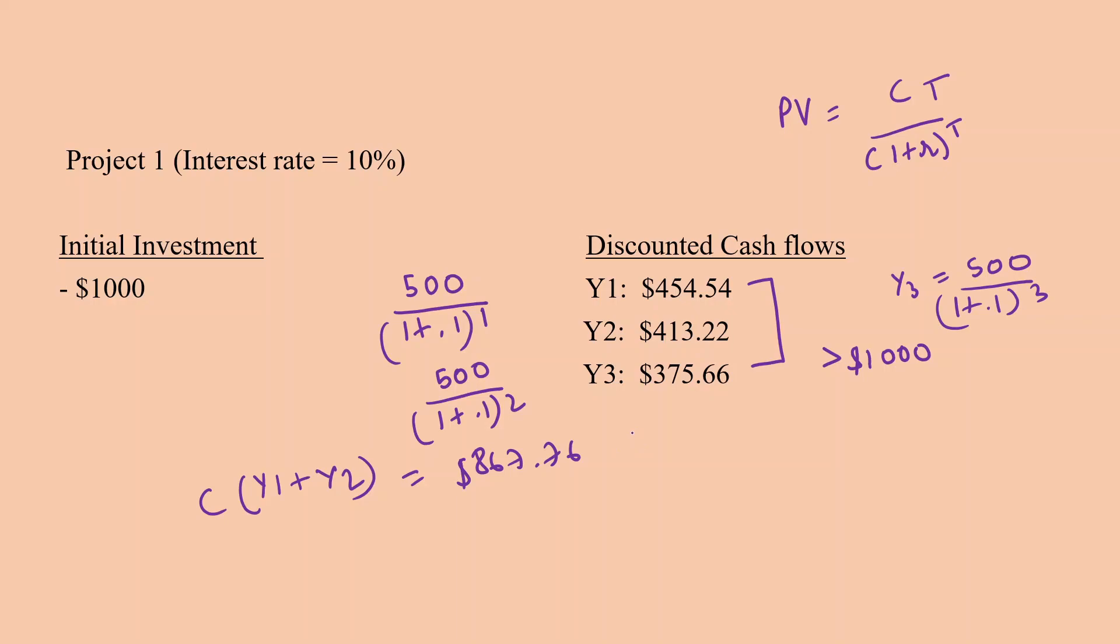And then we subtract this amount from $1,000, which is our initial investment, and this is equal to $132.24.